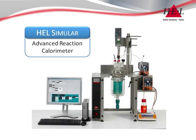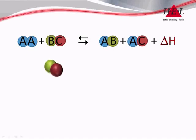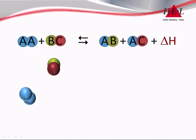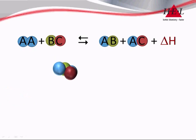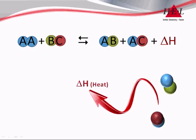HL Simula is a reaction calorimeter, a term used to describe instruments that measure the amount and rate of heat release from controlled chemical reactions. All molecules have energy stored in chemical bonds. When chemical reactions transform one chemical to another, some of this energy can be released as heat.